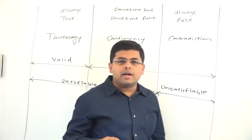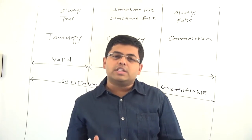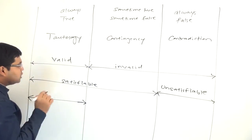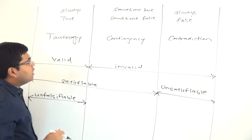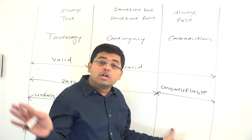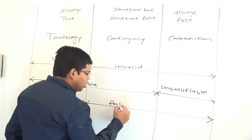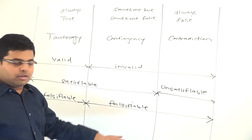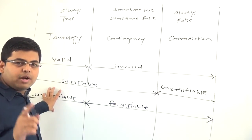A formula which can be made false is called falsifiable; otherwise it is called unfalsifiable. Tautology is a category which can never be made false because it is always true, and that is why tautological formulae are called unfalsifiable. Tautologies cannot be made false — that is why they are called unfalsifiable.